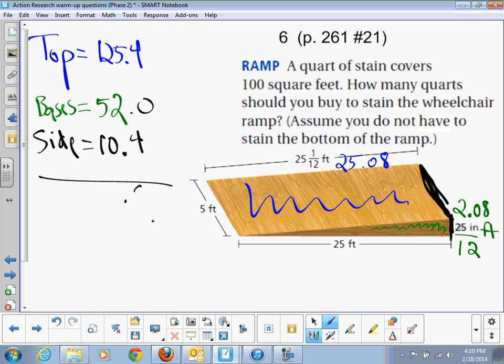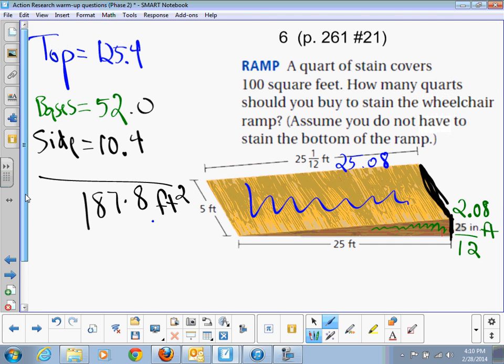4 plus 0 plus 4 makes 8. 5 plus 2 plus 2 plus 0 makes 7. 2 plus 5 plus 1 makes 8. And we just bring down our 1. So we end up with a total surface area of 187.8 square feet.